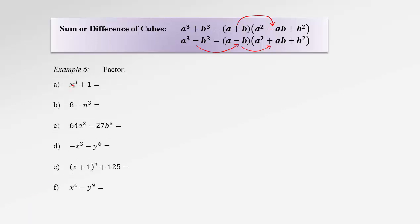To factor x cubed plus 1, consider 1 as 1 cubed, so we have a sum of cubes. Prepare a short bracket and a long bracket. In the short bracket: x plus 1. In the long bracket: square the first term to get x squared, switch the sign to negative, multiply the two terms to get x, then add the square of the last term which is just 1. So the result is (x plus 1)(x squared minus x plus 1).